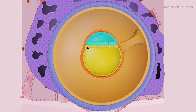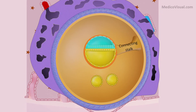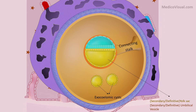The hypoblasts then start proliferating and form a new wall within the umbilical vesicle or yolk sac — like a smaller box nested inside a larger box. The remaining part of the original umbilical vesicle or yolk sac forms the exocelomic cyst, and the yolk sac or umbilical vesicle is now called the secondary or definitive yolk sac or umbilical vesicle.